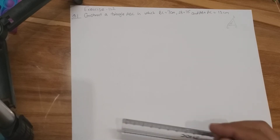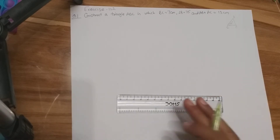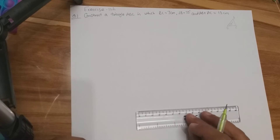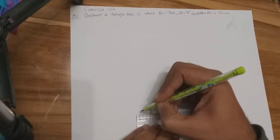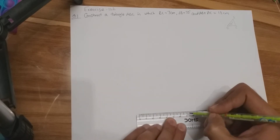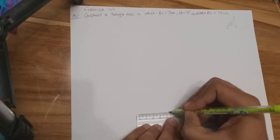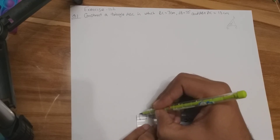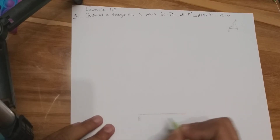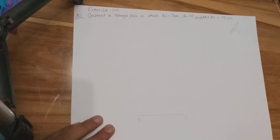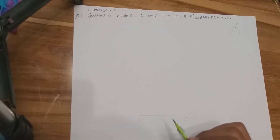To draw this diagram, first we need to draw a base of 7 centimeters and name it BC. Let's mark the initial point B, then mark another point C at a distance of 7 centimeters. This is point B and this point is point C.